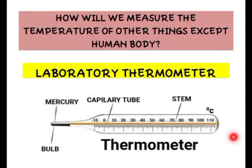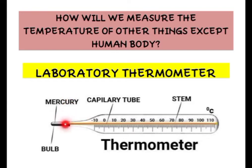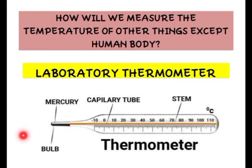This thermometer is also similar to a clinical thermometer in structure. It has a glass tube known as the stem of the thermometer. Inside the glass tube, there is a capillary tube — a small, thin pipe-like structure — through which mercury rises when brought in contact with a hot object. The bulb is the portion which you actually dip into a hot body to measure its temperature, and inside the bulb there is liquid mercury.